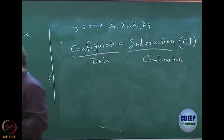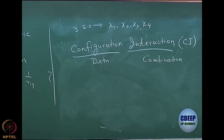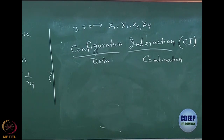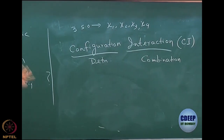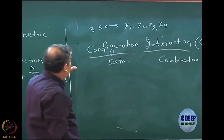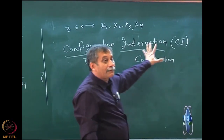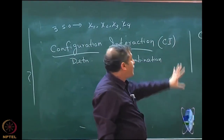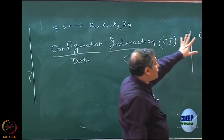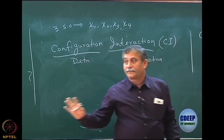Depending on how I truncate, the CI has different flavors: CISD, CISD triples, and so on — we will cover those later. The key point is that mathematically, this is an exact form provided the basis is complete.